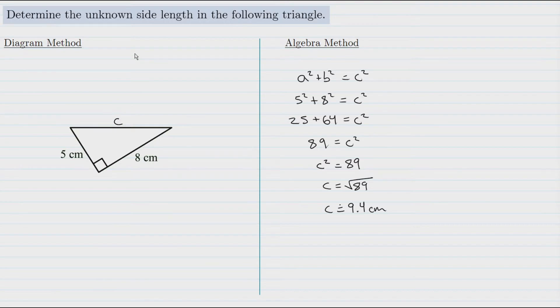We could also solve this problem by just using a diagram. Recall that the Pythagorean theorem is all about areas — specifically areas of squares that are built on the sides of the triangle. So if I make a square off of each side of this triangle — of course if you want it to look really nice you can use a ruler — let's draw those squares.